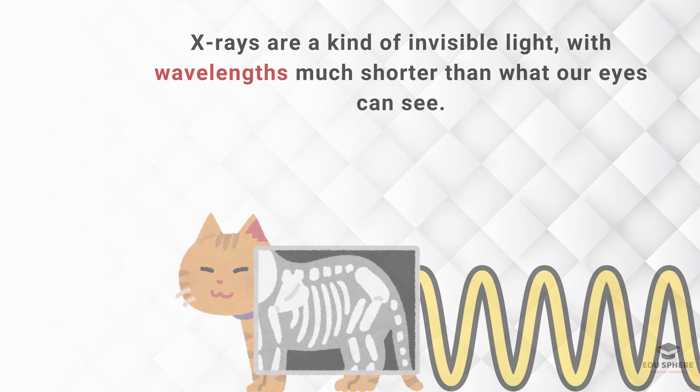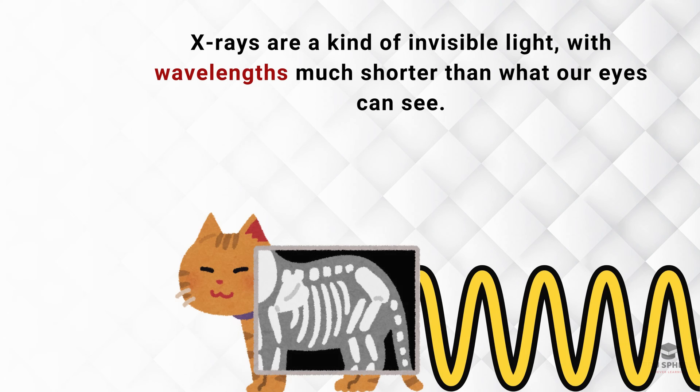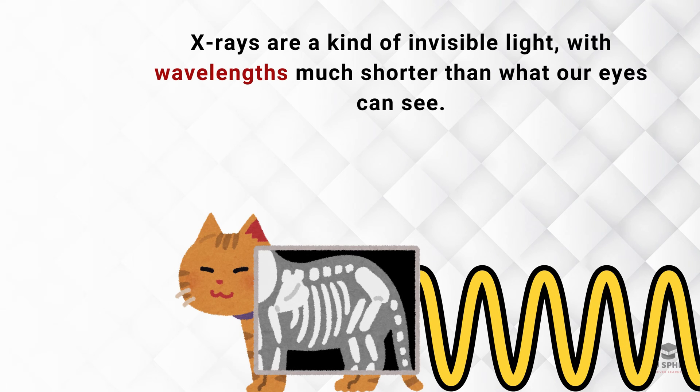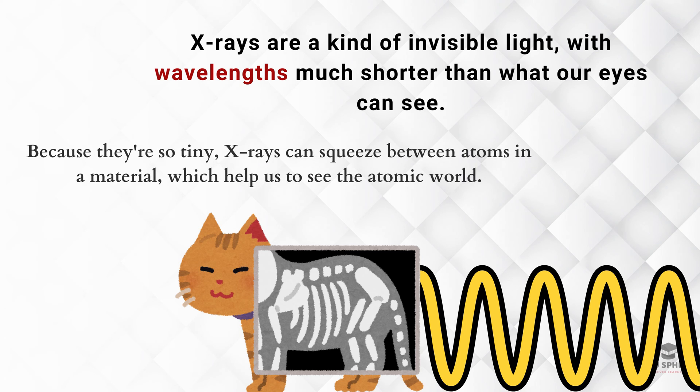Imagine light, but way more powerful. X-rays are a kind of invisible light with wavelengths much shorter than what our eyes can see. Because they're so tiny, X-rays can squeeze between atoms in a material, which helps us to see the atomic world.